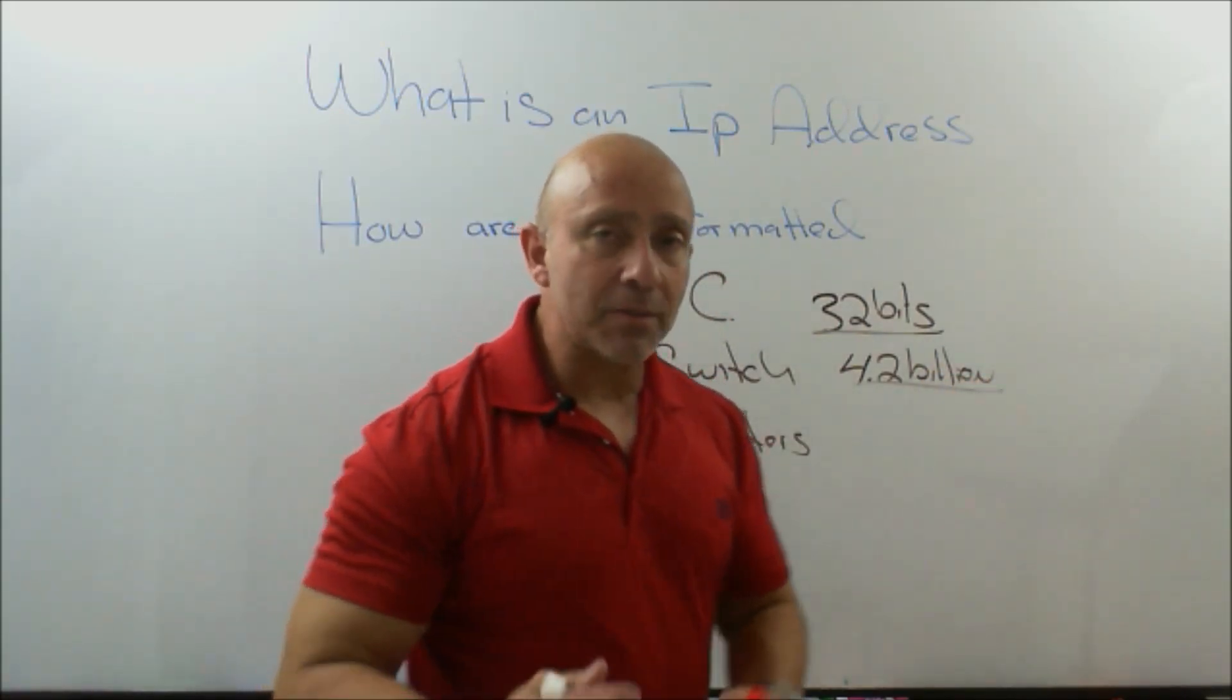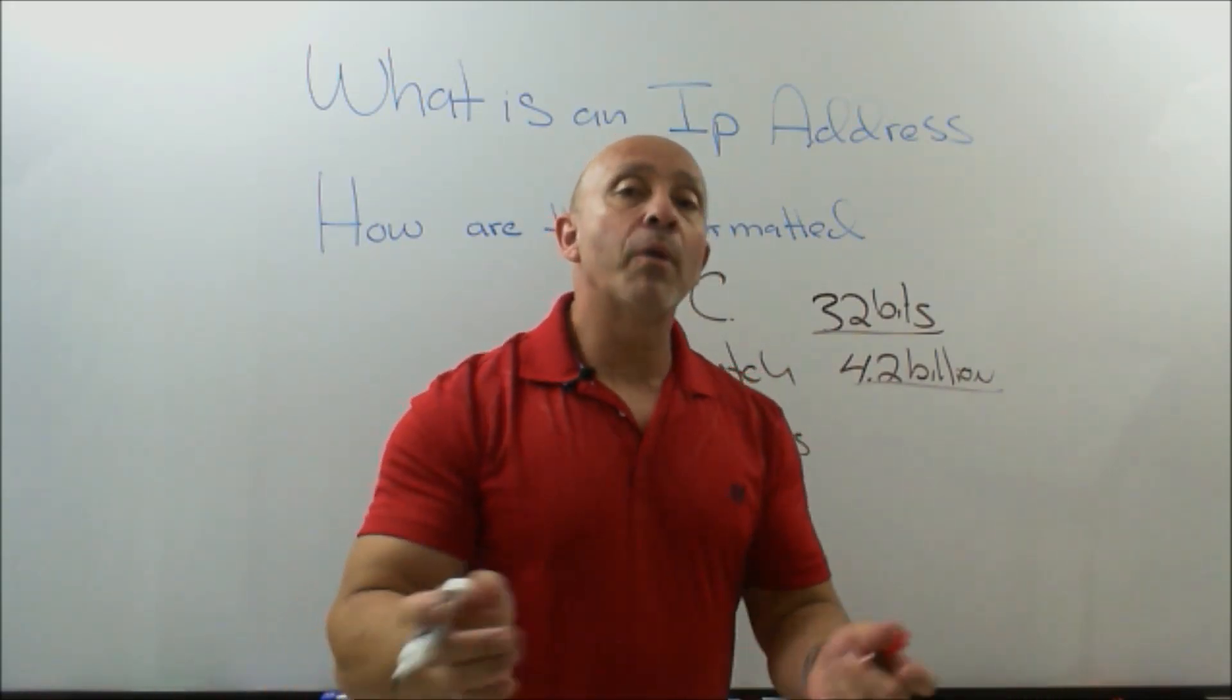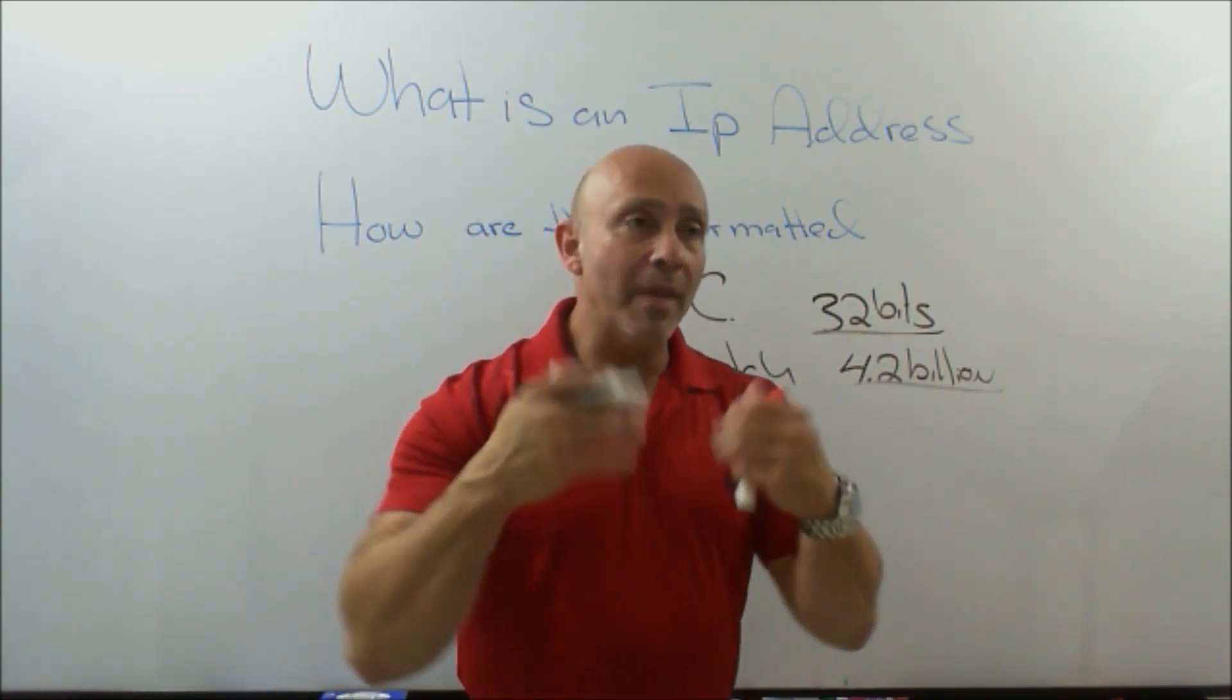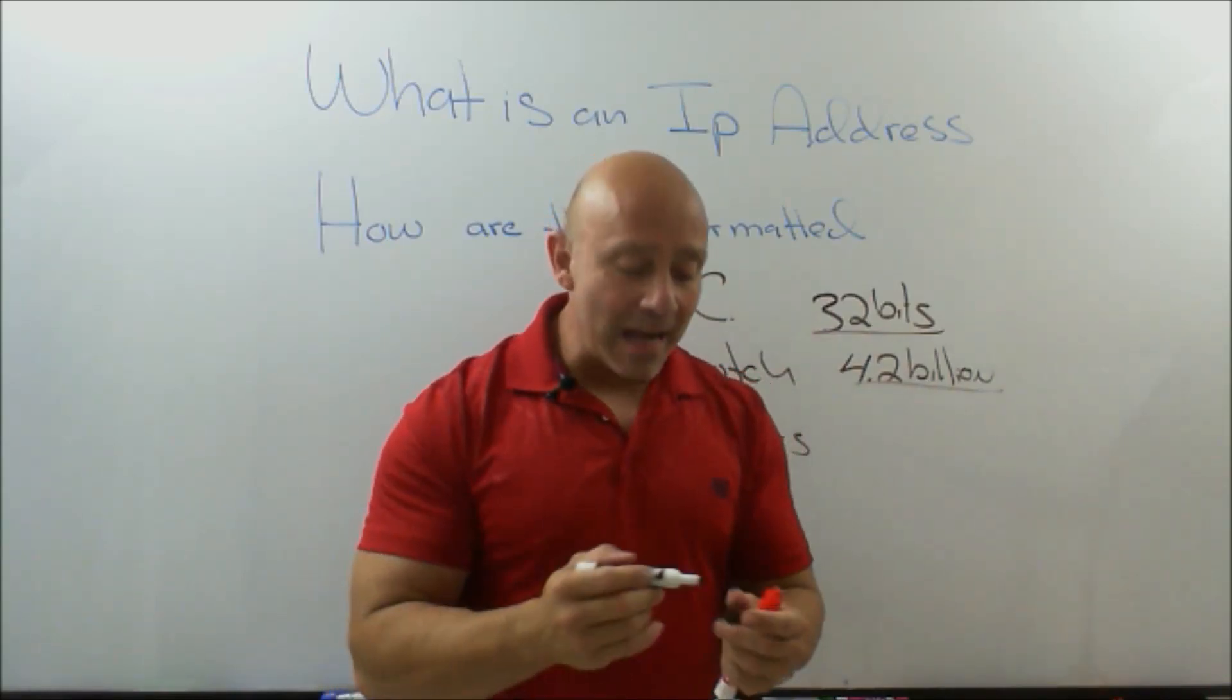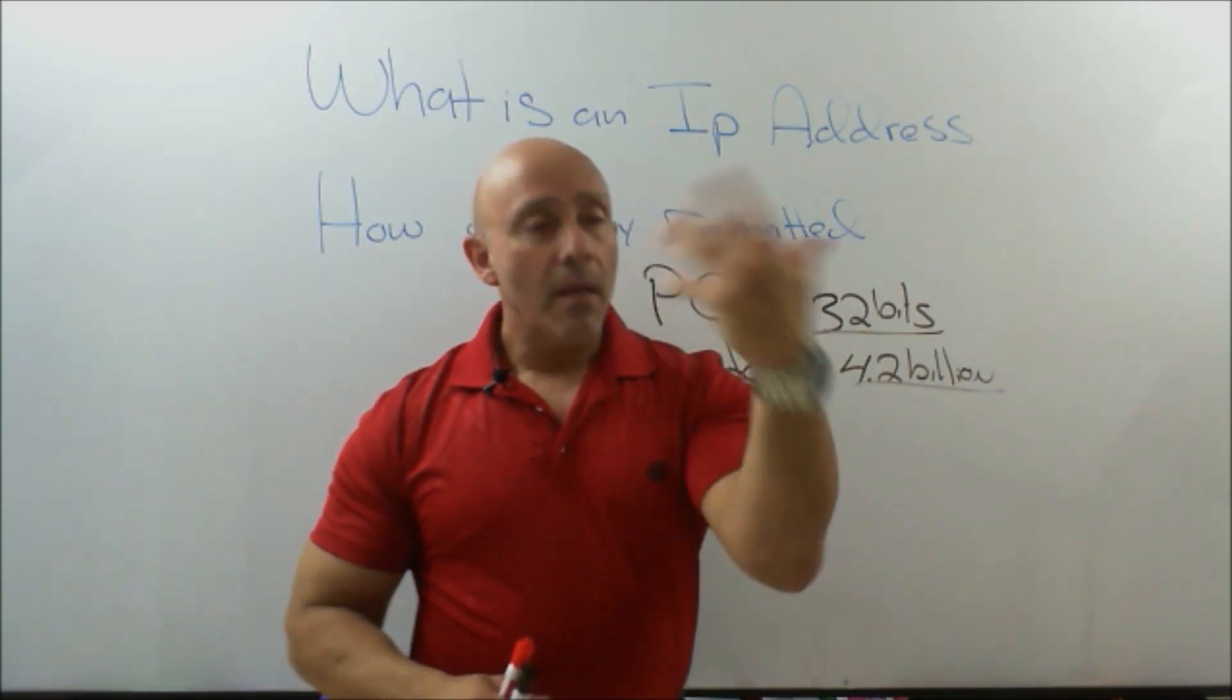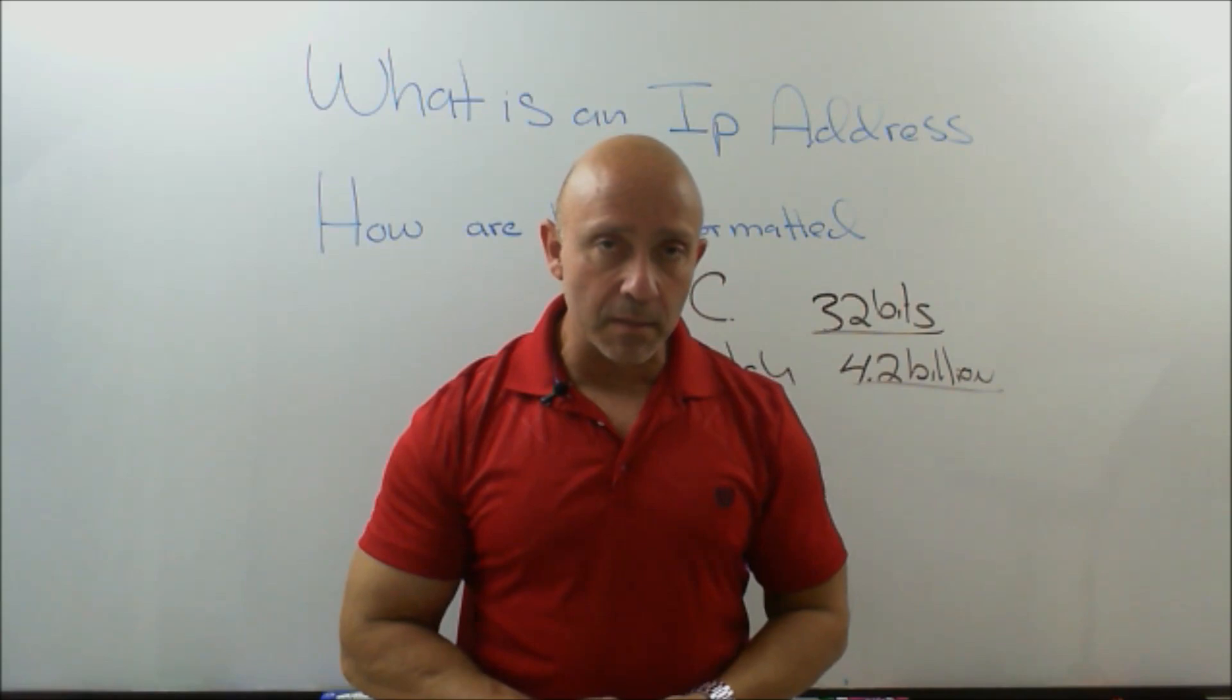So again, this is just trying to get you to understand what an IP address is. It's a 32-bit address that we assign to devices on the network. So they are unique addresses, unique addresses to each device, so we can access those devices throughout our network. So this will be the end for lecture one, and then when we go to the next lesson, we'll start getting deeper into IP addresses. Thank you.